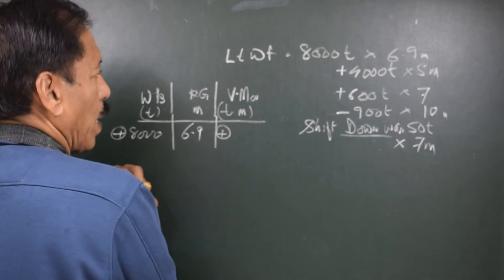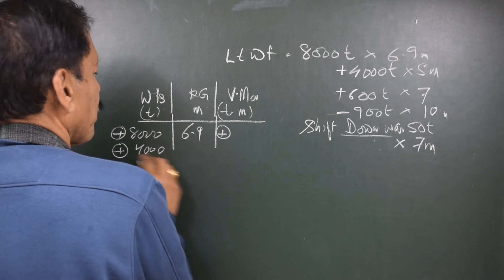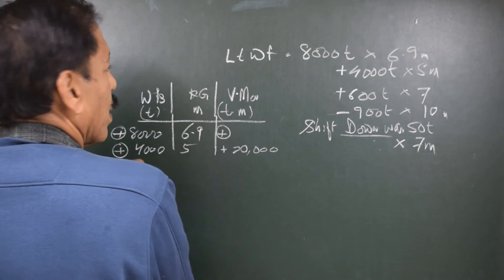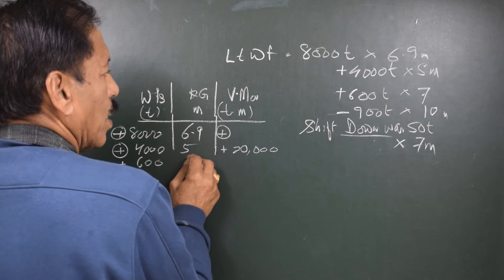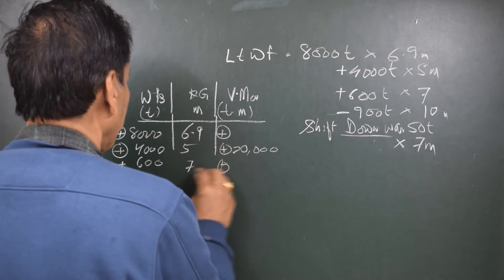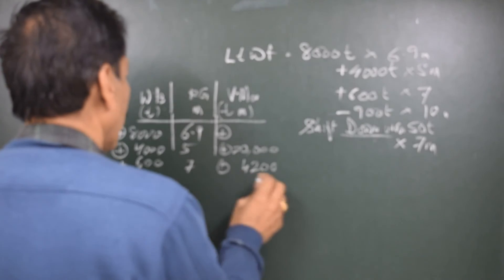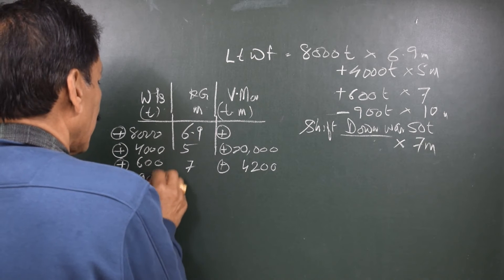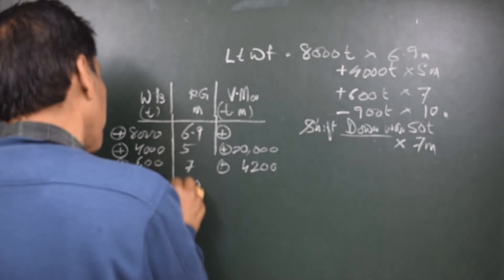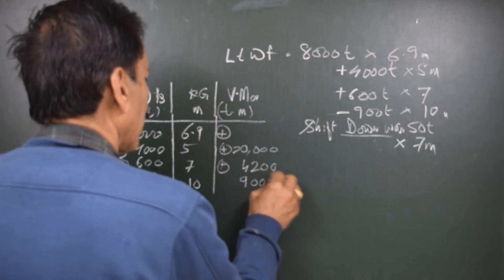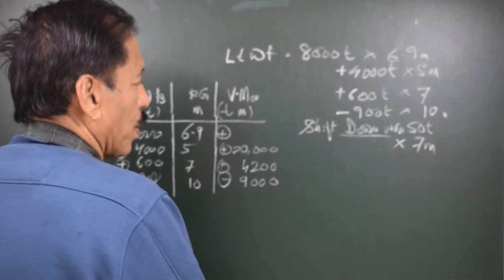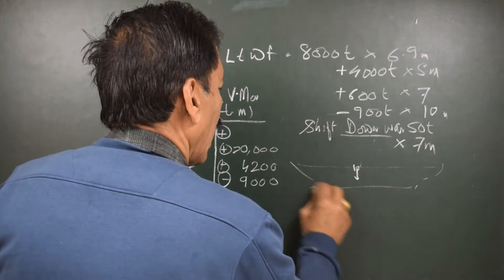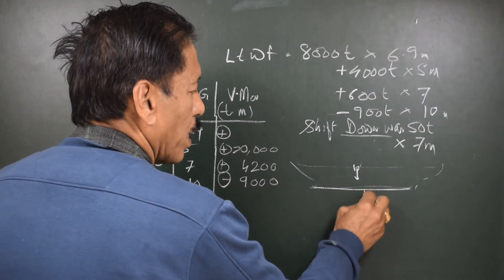The light ship moment is positive. We add 4,000 tons at a KG of 5 meters, giving a moment of 20,000 ton-meters. Then we add 600 tons at a KG of 7 meters — also positive — giving 4,200 ton-meters. Then there is the discharge: a negative sign for 900 tons at a KG of 10 meters, giving minus 9,000 ton-meters. Now we are shifting a weight downwards, and these moments are taken about the keel.